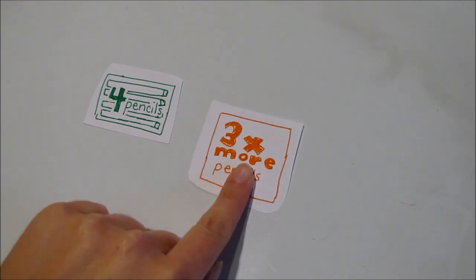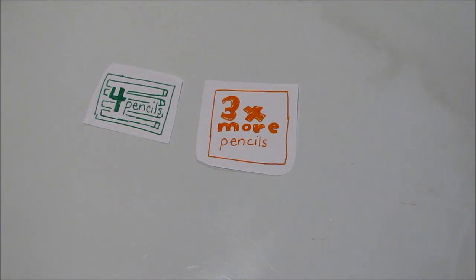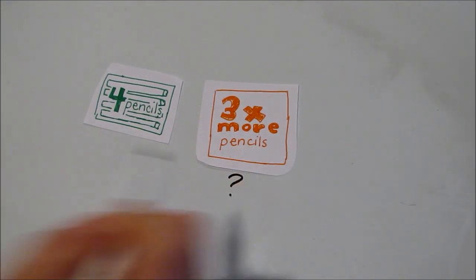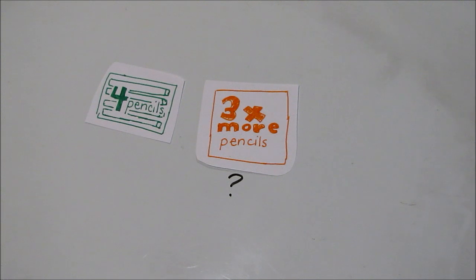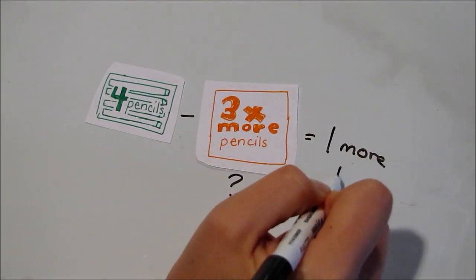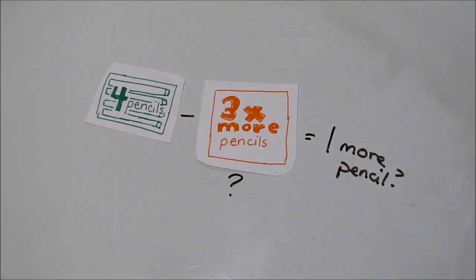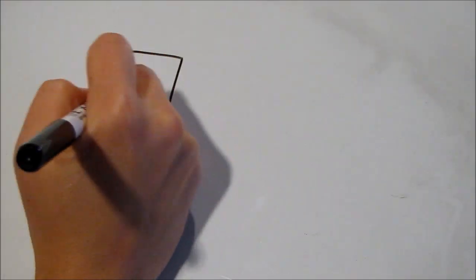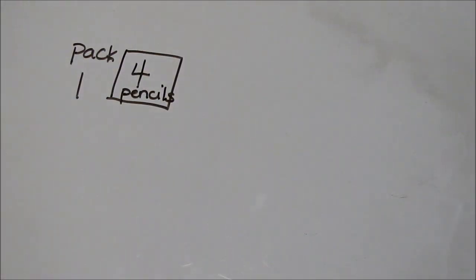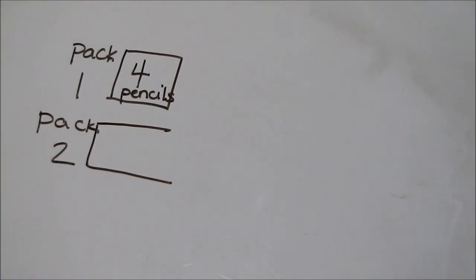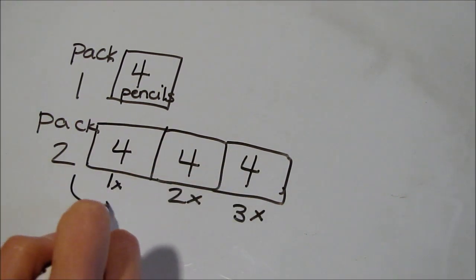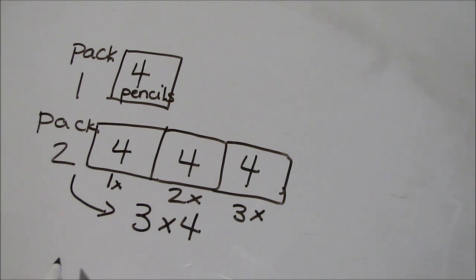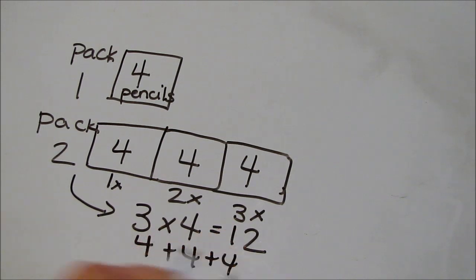Let's look at an example. I bought two packages of pencils. One package has four pencils, and the other package has three times as many pencils. I want to know how many pencils are in the second package. I'm not combining the packages because I'm not looking for a total. I'm not separating the pencils because they're already separated. I can't just compare four and three because that would leave me with one pencil in the second package, and that doesn't make sense. So I draw my two strips — one for package one and another for package two — and label package one. Three times means that package two has three groups, and every group is as big as package one. So I have three groups of four. I can add those fours or multiply them to get a total of twelve pencils.